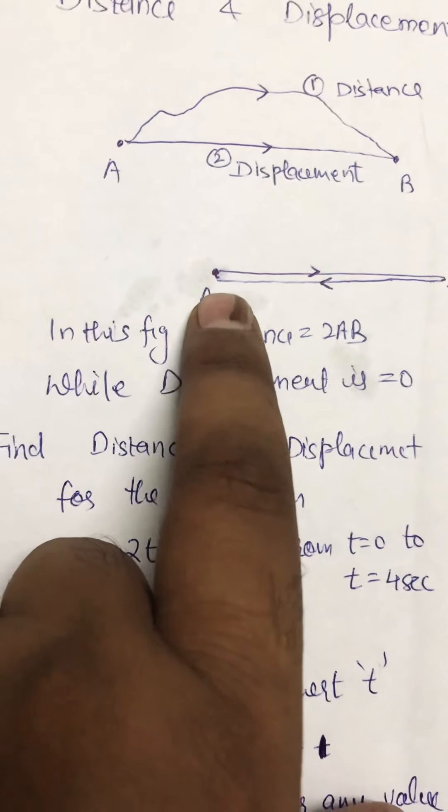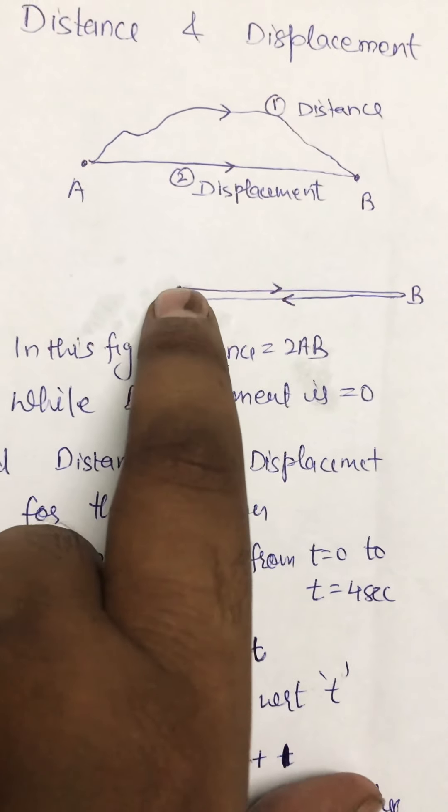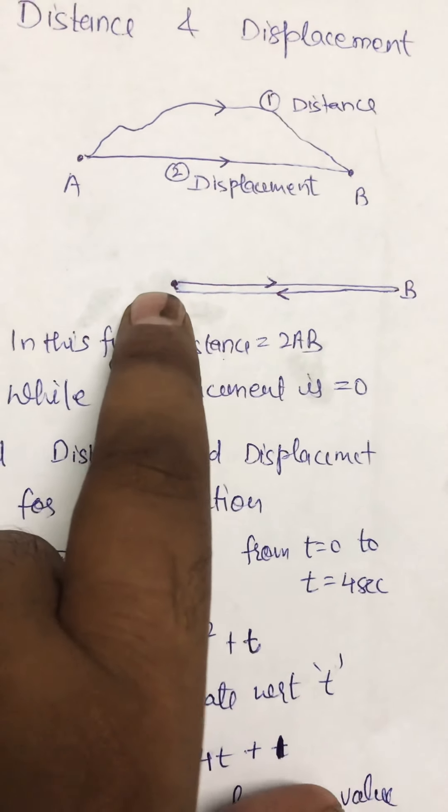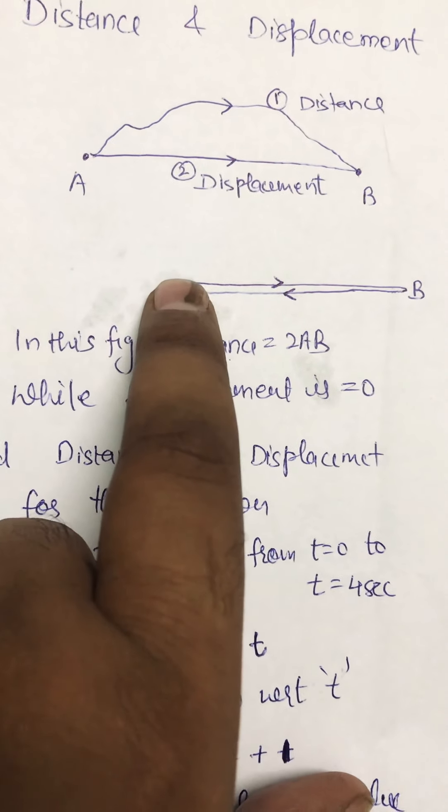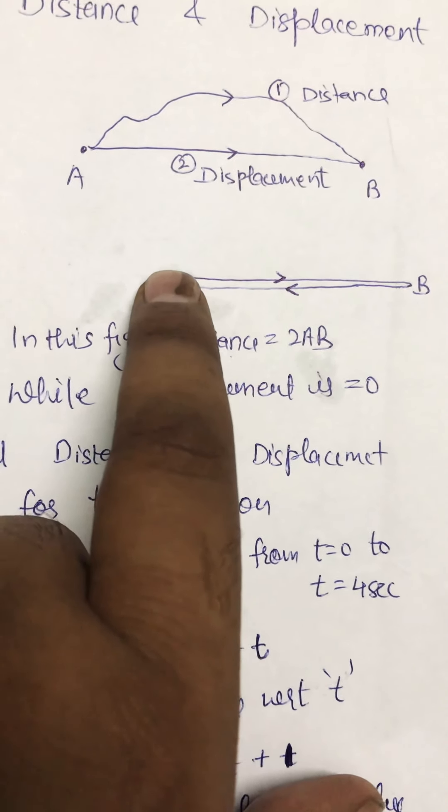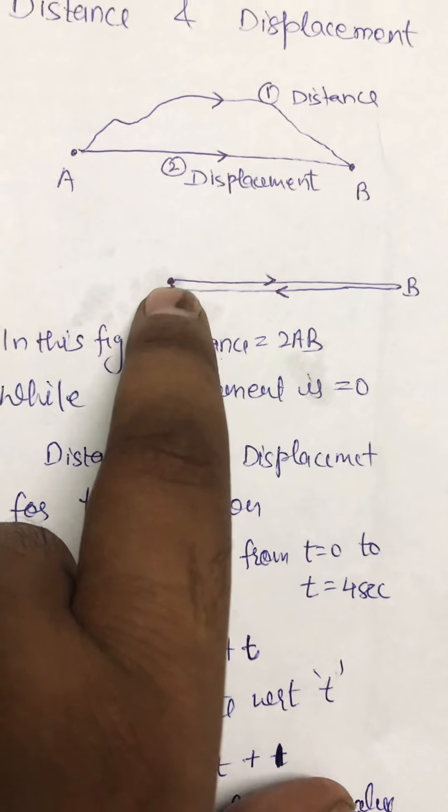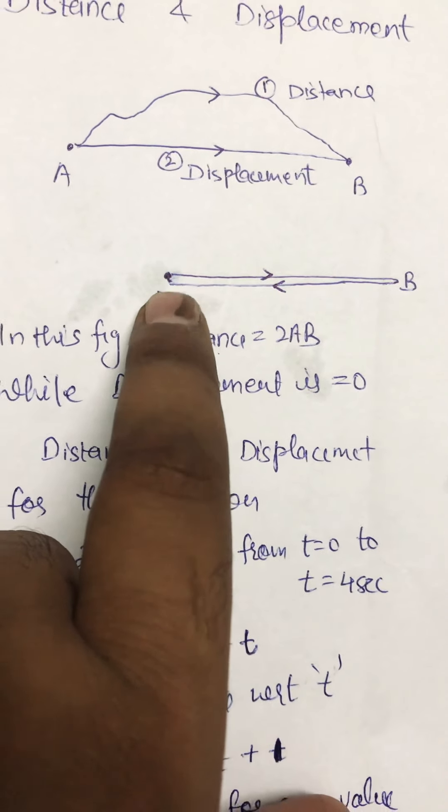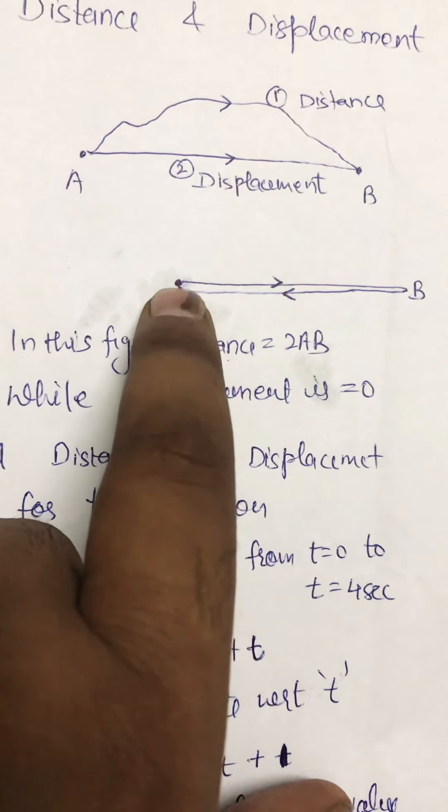Now in this figure, we move from A to B and back to A. Then the displacement of the body is zero, as starting point is A and ending point is also A. Therefore, net displacement is zero.